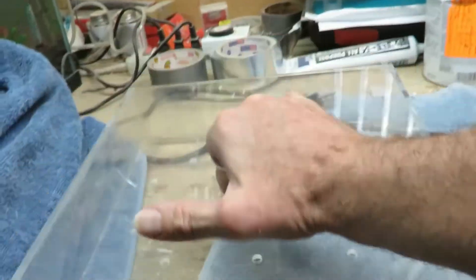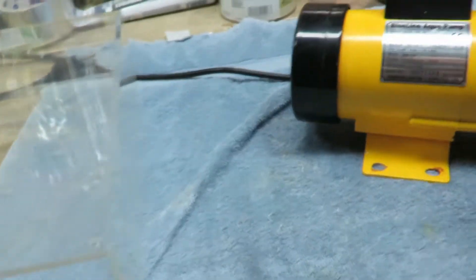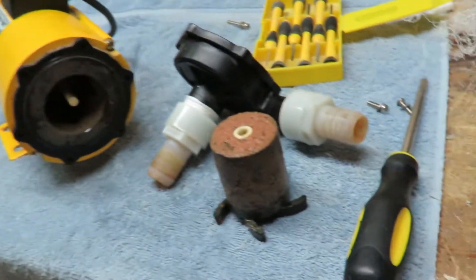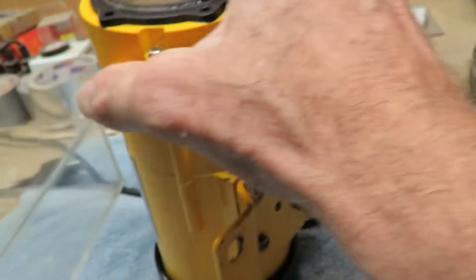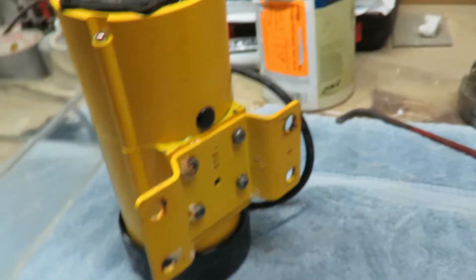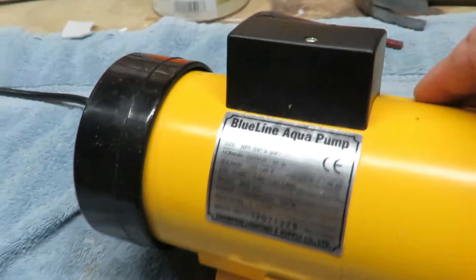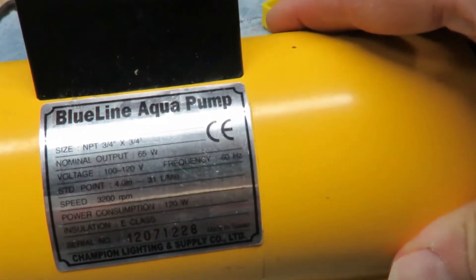They're drilled out and cleaned up. While we have it apart, the system's been running since 2011 and the pumps are slowing down. This is why. When you take this pump apart—these move 750 gallons an hour—this is a BlueLine Aqua Pump, a BlueLine 40.